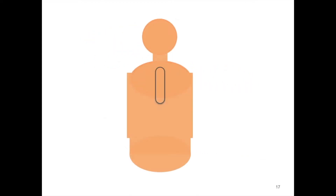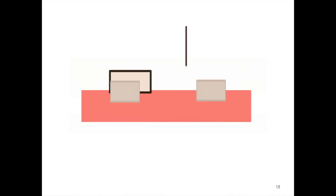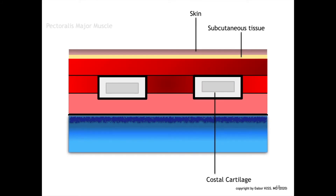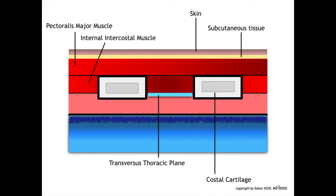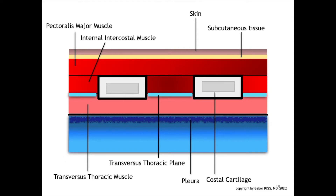Let's have a view on the anatomy on a cross-section view about 2 cm lateral from the sternum. We will recognize the following structures: the pectoralis major muscle, the internal intercostal muscle, the transverse thoracic plane, and the transverse thoracic muscle with underneath the pleura. As a mnemonic, we can remember the successive muscle layers — pectoralis major, internal intercostal, and transverse thoracic muscle — as PIT, like pit bull.